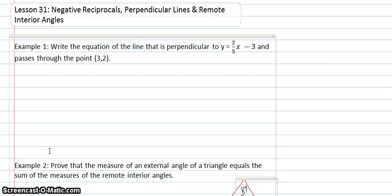The first example is to write the equation of the line that is perpendicular to y equals 2 fifths x minus 3 and passes through the point 3, 2.